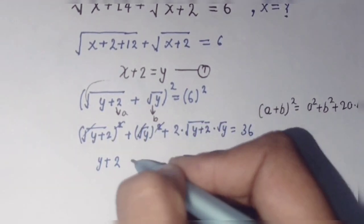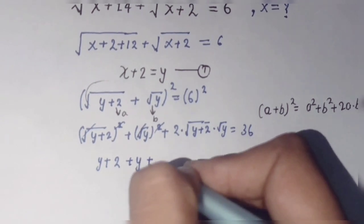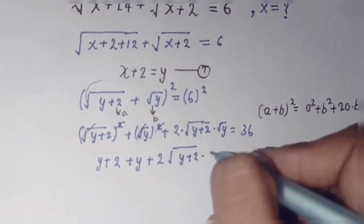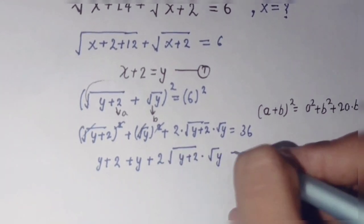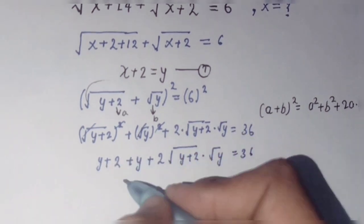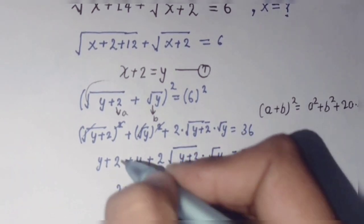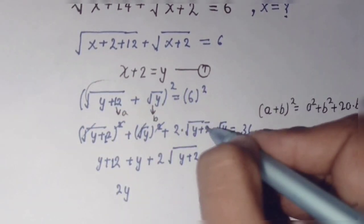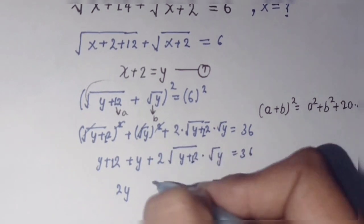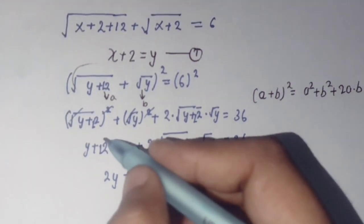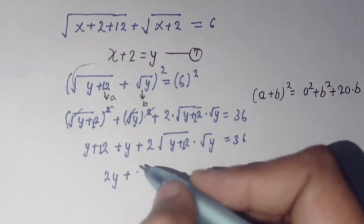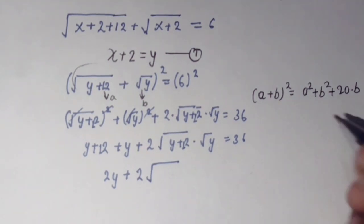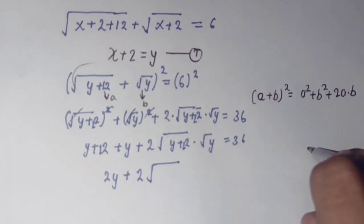Simplifying the left side: (y + 2) + y = 2y + 2, and the cross term is 2·square root of y·(y + 2). So 2y + 2 + 2·square root of y(y + 2) = 36. Moving 12 to the right side, we prepare to isolate the square root term.